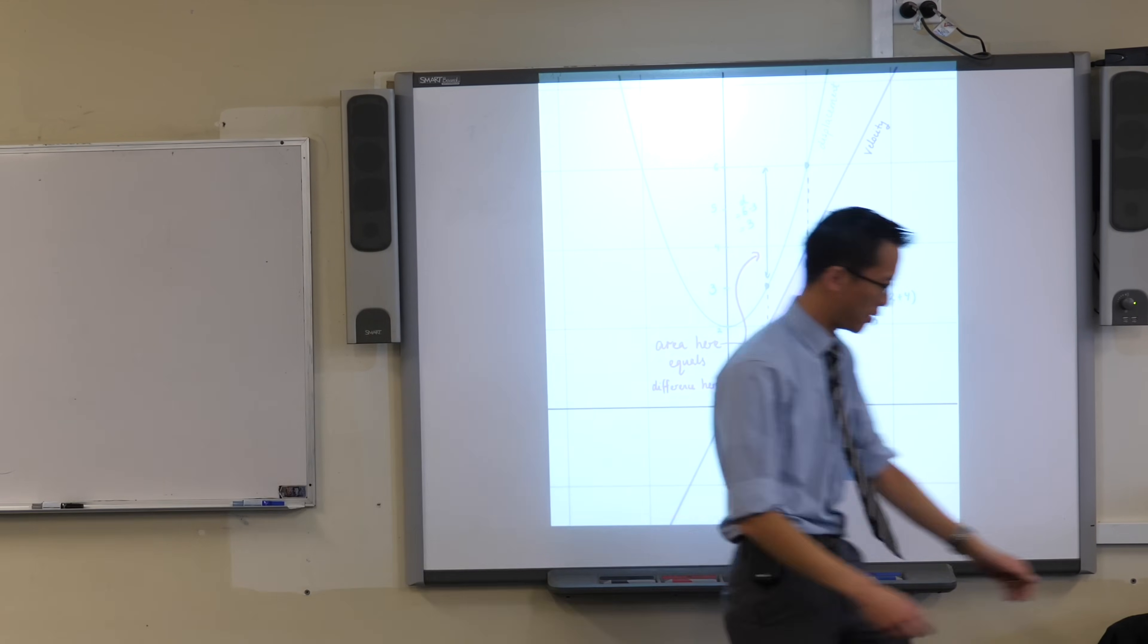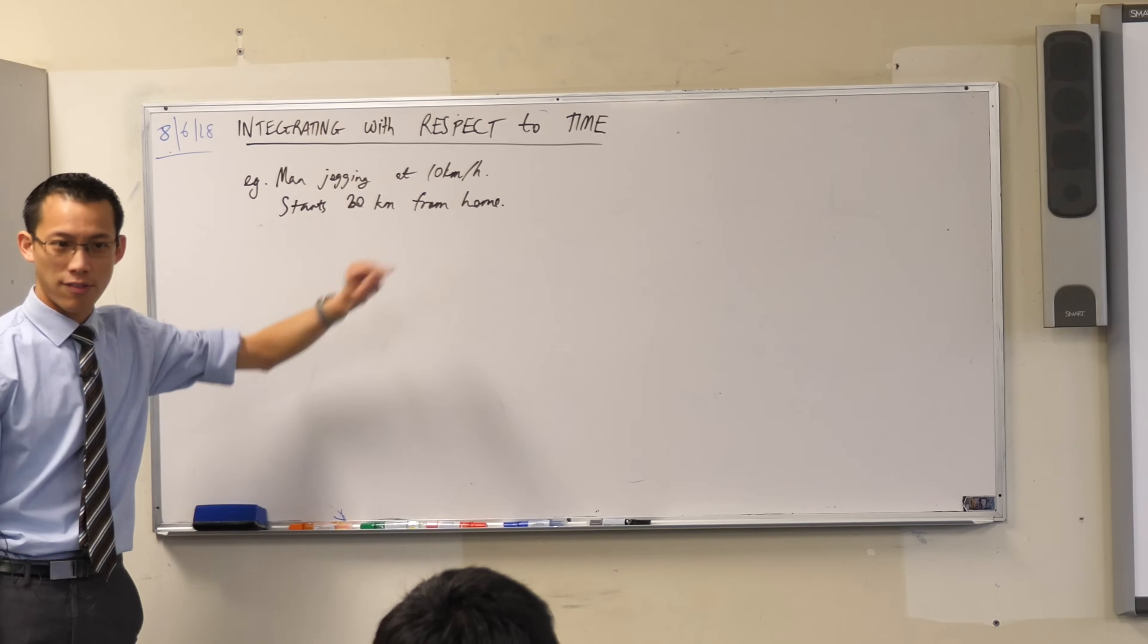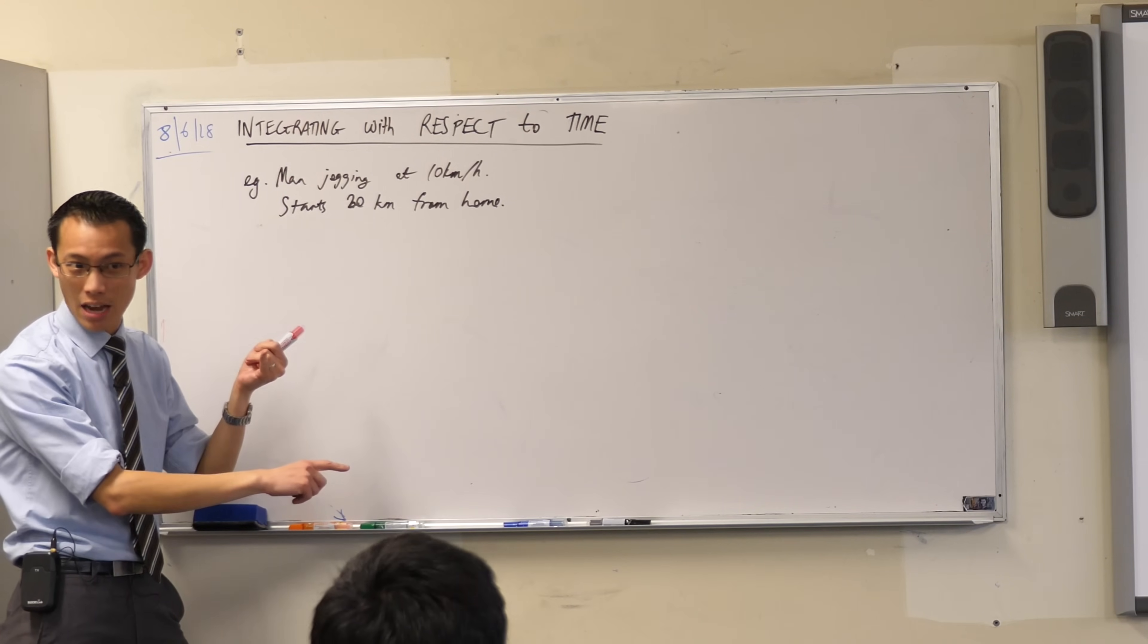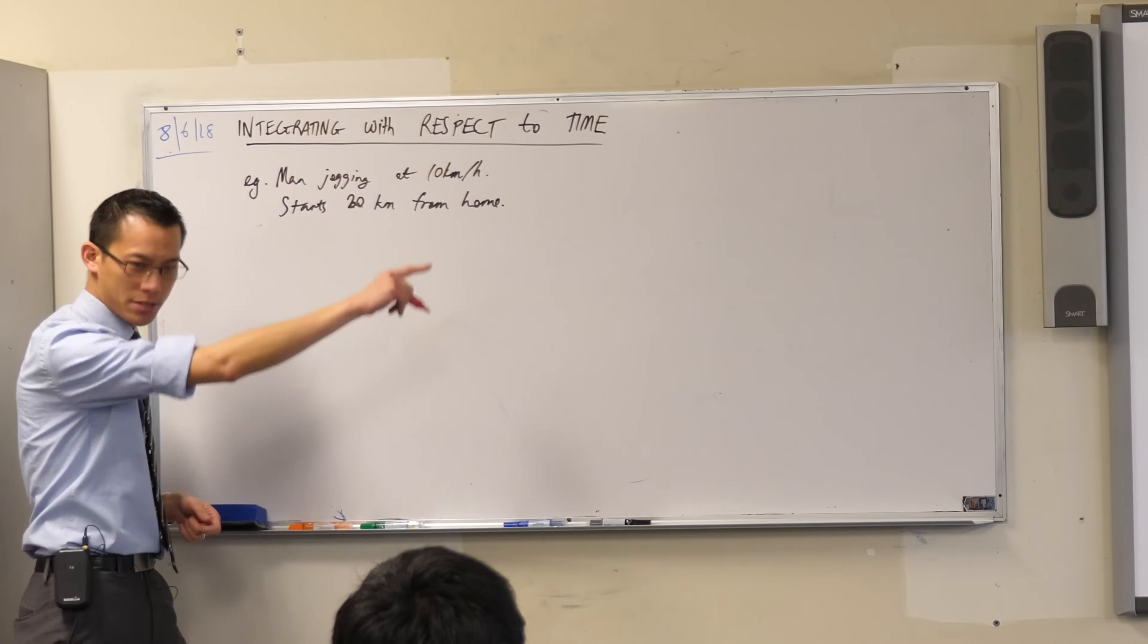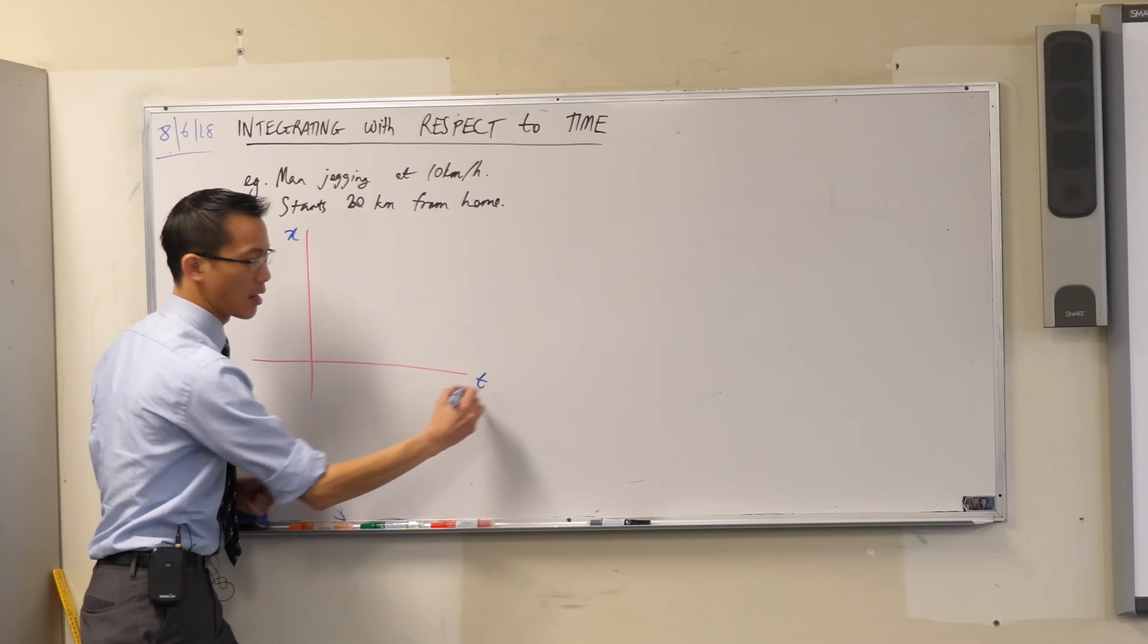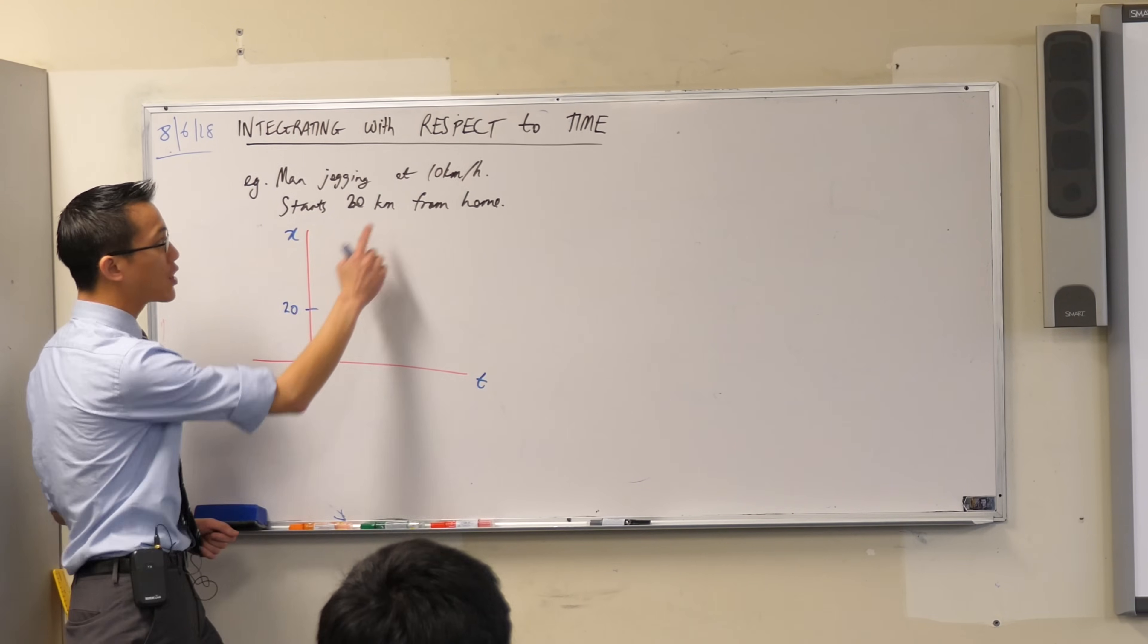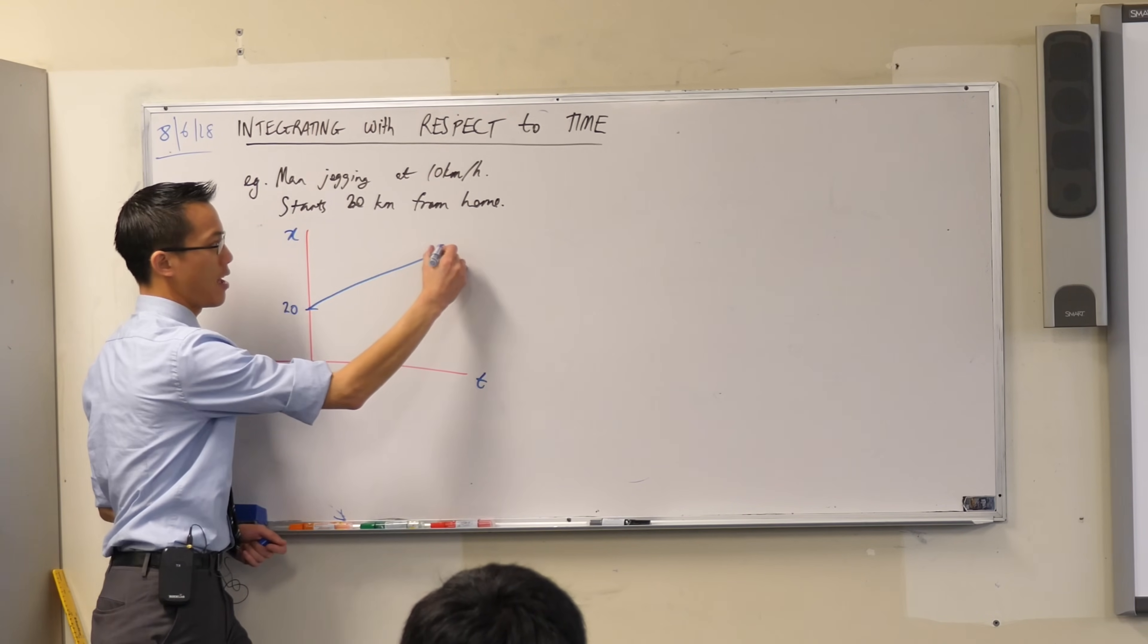Now I want to push on this intuition a little more. I have a man, he's jogging at this particular speed, 10 kilometers per hour, and I'm going to start him off 20 kilometers from his home. So what I'd like us to do now is draw the displacement time graph and the velocity time graph. So let's make him run in the opposite direction to my home. If he begins 20 kilometers from home, then that means my intercept here on the displacement axis is going to be 20, that's where he begins. And because he has a constant velocity, that means that this displacement graph is just going to get further and further and further away.